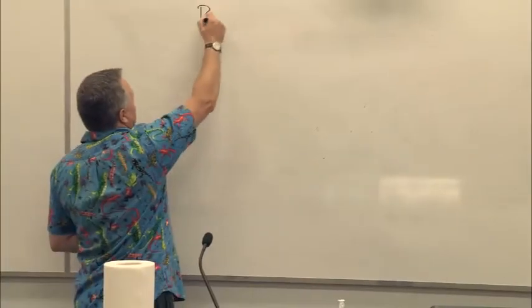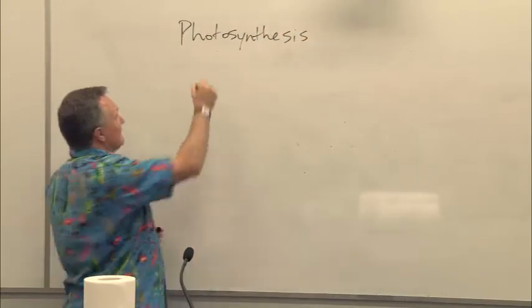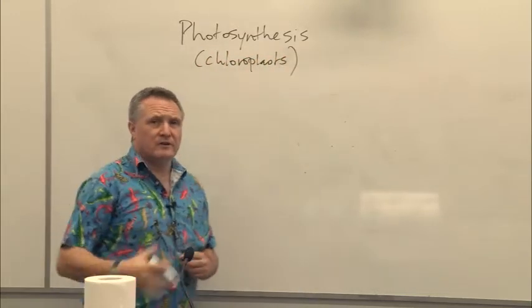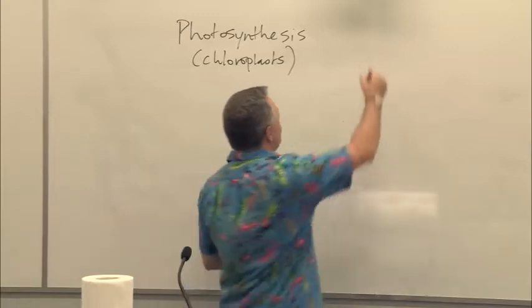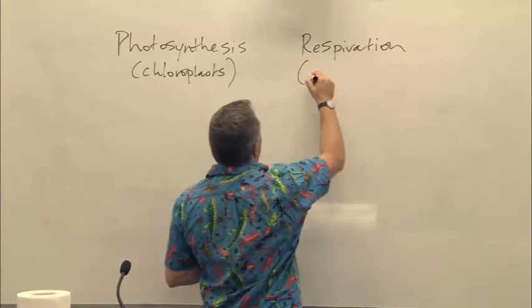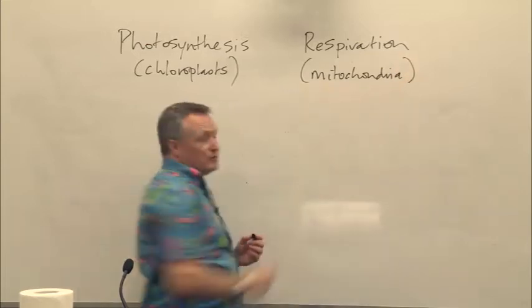We're covering the two main energy reactions in plants. One is photosynthesis, which occurs in organelles called the chloroplasts. The other is called respiration — some people mistake that for breathing, but it's actually breaking down food to produce energy, and that occurs in organelles called mitochondria. We would have covered that in unit two.